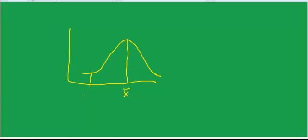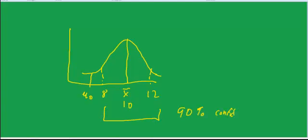I'm going to put mu-naught over here. So let's say x-bar is 10. Let's say we have a 90% confidence interval that goes from 8 to 12. And let's say the mu-naught is 7.